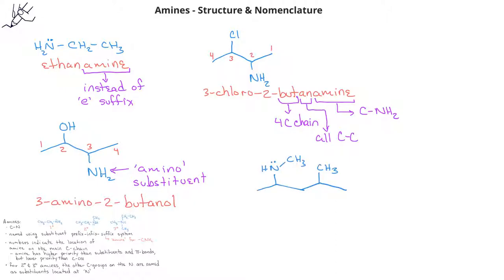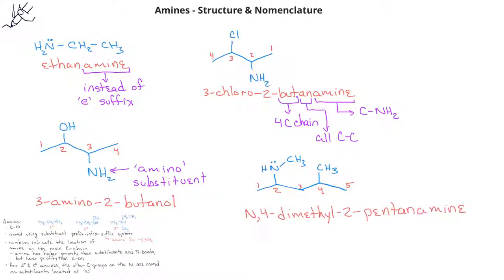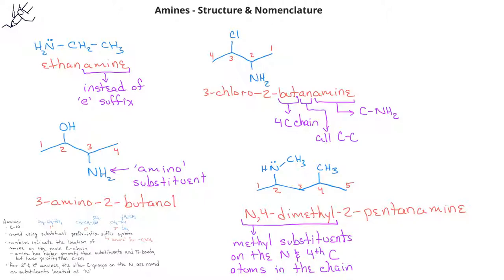In this last example, we have a secondary amine because the nitrogen is directly bonded to two other carbons. The 5-carbon chain would be the main carbon chain, so this would have the prefix pent. The amine group is on the second carbon, so this is a 2-pentanamine, and we notice a methyl substituent bonded to the nitrogen and also a methyl substituent on the fourth carbon. We would name this compound N,4-dimethyl-2-pentanamine.